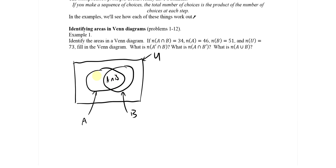This part of A is the part of A that's not in B — that's A intersection B prime, everything in A and not in B. This section is A prime intersection B — everything not in A but in B. A prime means 'not,' and intersection means 'and.' The region outside both circles is A prime intersection B prime — not in A and not in B. Those are the four regions of a Venn diagram.